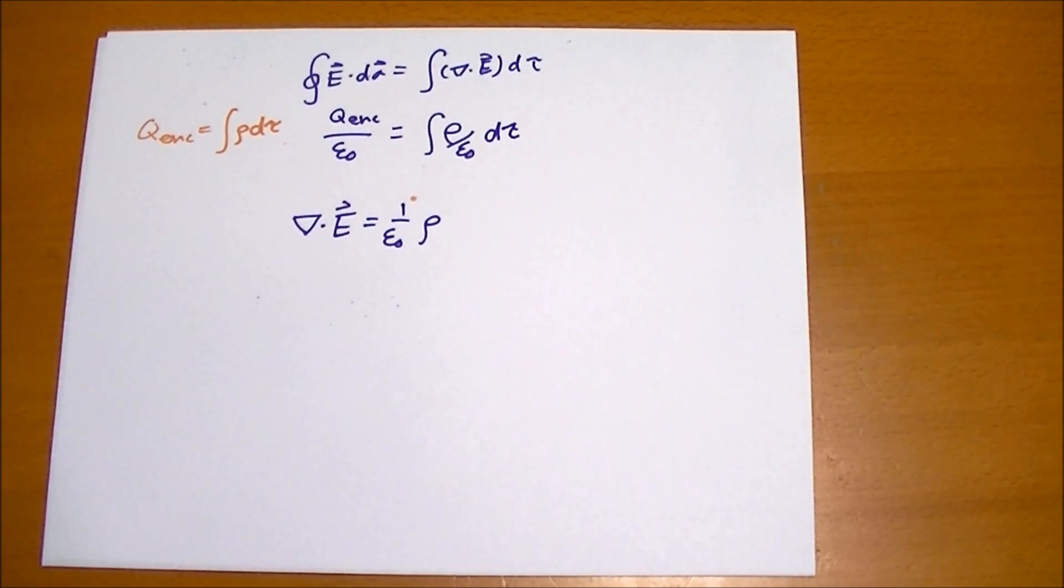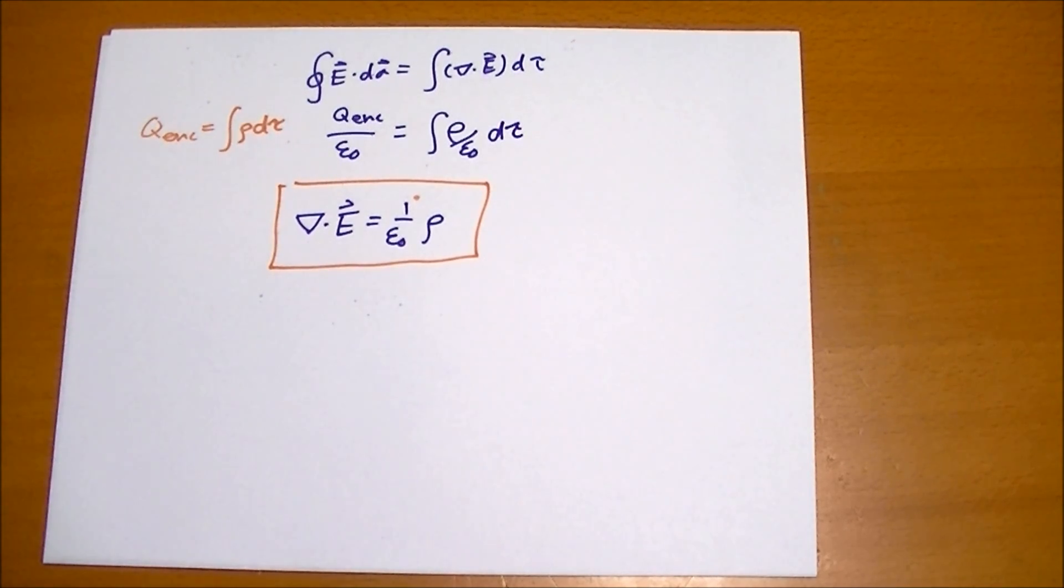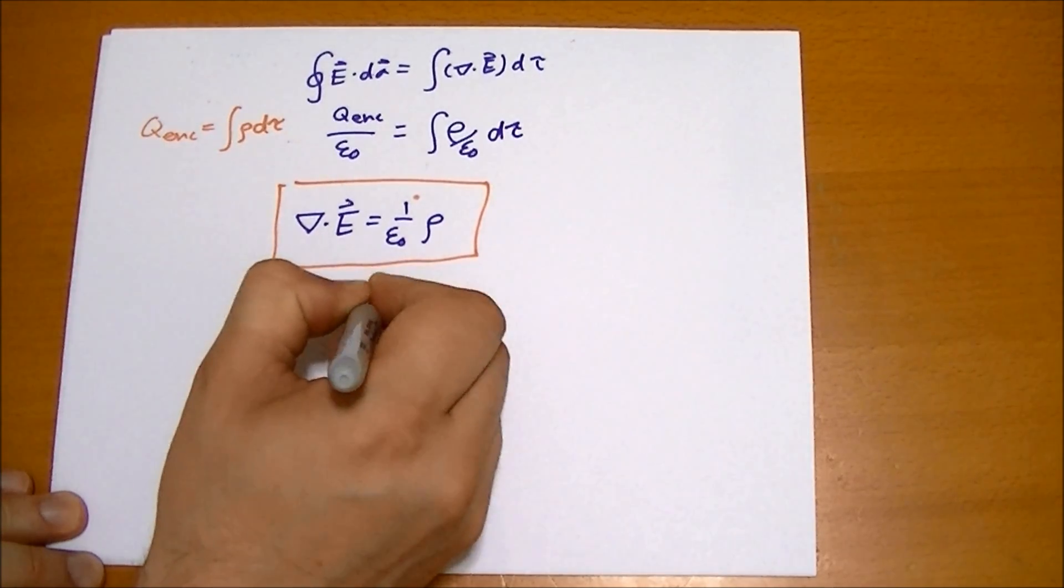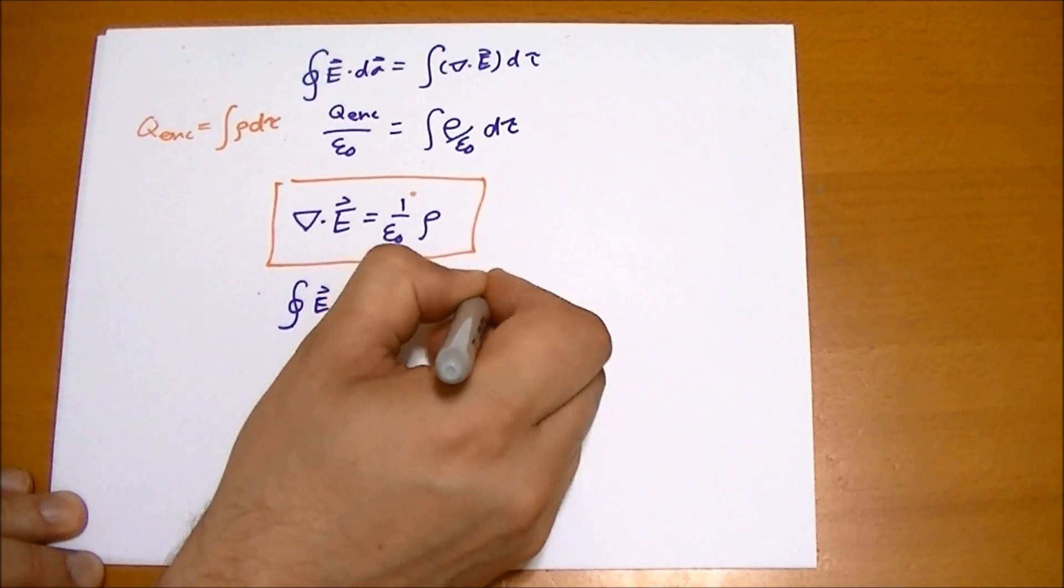That's pretty much all there is to say about this principle. These two formulas you're going to want to memorize. One is Gauss's law in differential form, and the other is Gauss's law in integral form. So that's the surface integral of the flux is equal to one over epsilon naught, the total charge enclosed.